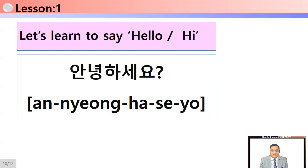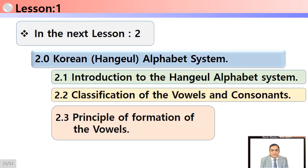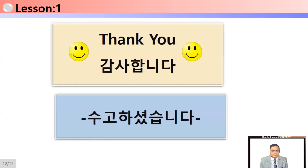We are completing Lesson 1 here. In Lesson 2, we will learn about the Korean Hangul alphabet system — covering the introduction to the alphabet system, classification of vowels and consonants, and the principle of formation of vowels. See you in Lesson 2! Kamsaamida — meaning 'thank you.' Annyeonghaseyo!